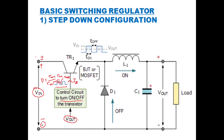Whenever the transistor is on, current passes through the circuit, charges the inductor, and the inductor stores energy with a certain polarity (plus-minus). The output voltage appears across the capacitor, and v_out equals v_in during this period. When a negative pulse arrives, the transistor turns off and there is no current from the source.